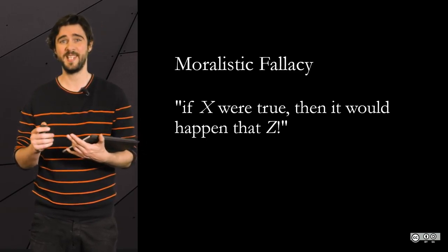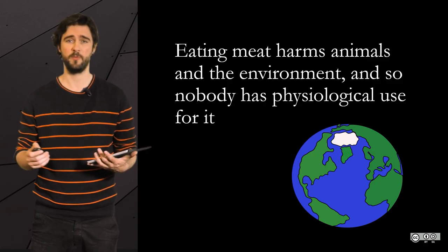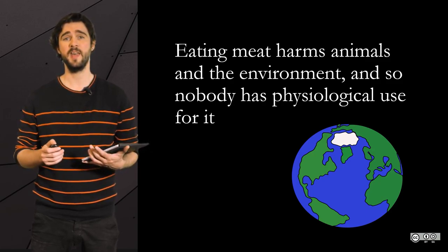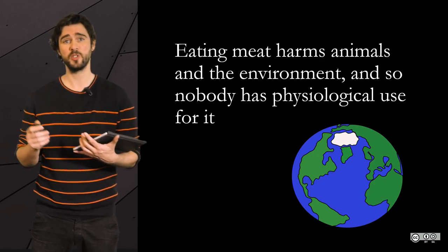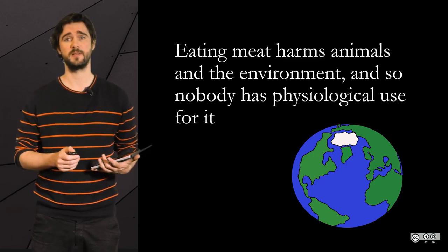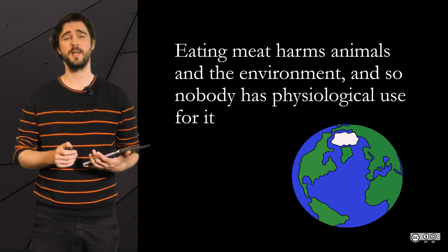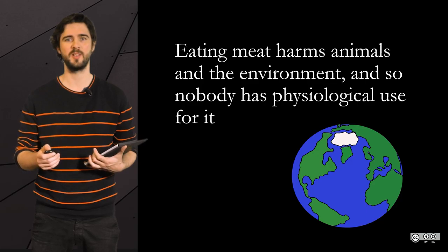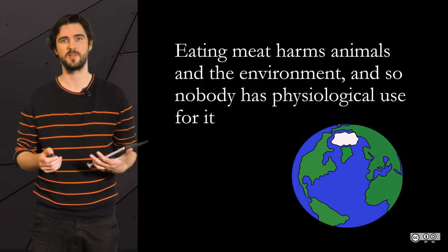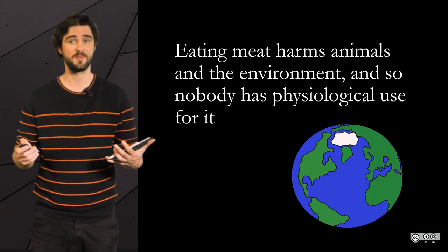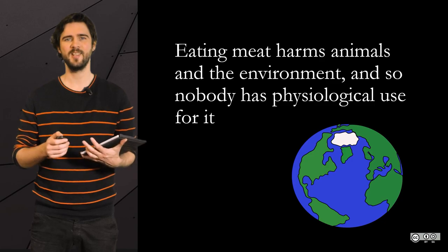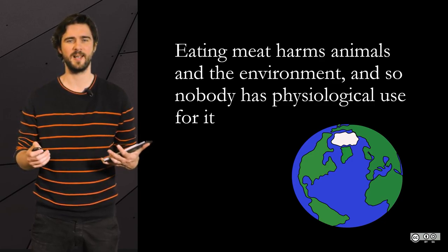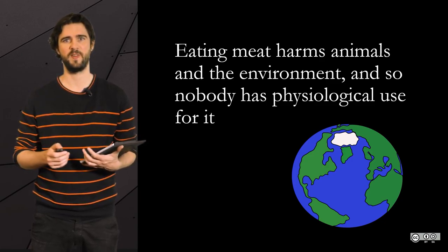So let's start with the moralistic fallacy. You can model it as follows: if X were true, then it would happen Z, where Z is a morally, socially, or politically undesirable thing. And people often imply afterwards that since Z is undesirable, then X is not true.